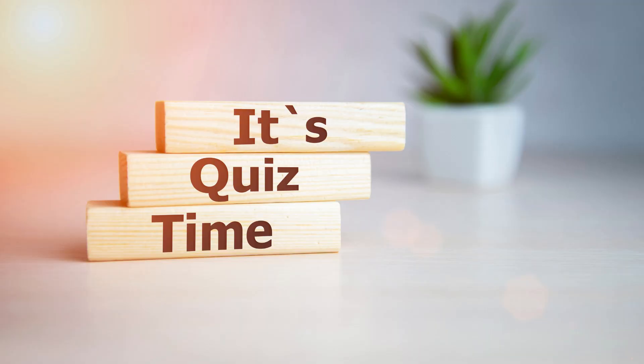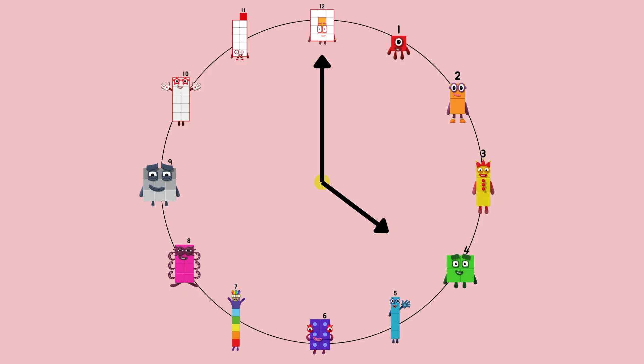Now it's quiz time. Are you ready for some questions? What time is it? Big hand is at 12. Little hand is at four. So it's four o'clock. Well done.